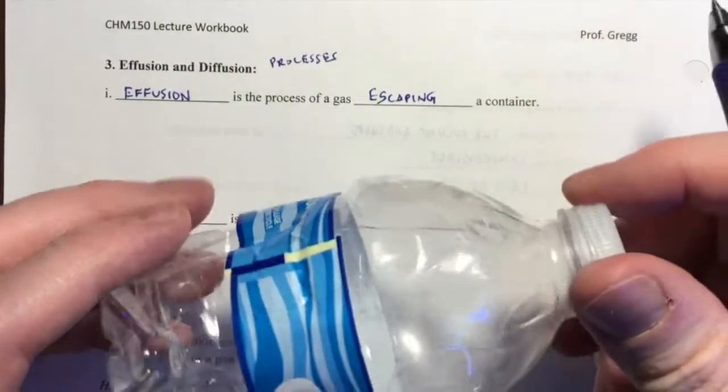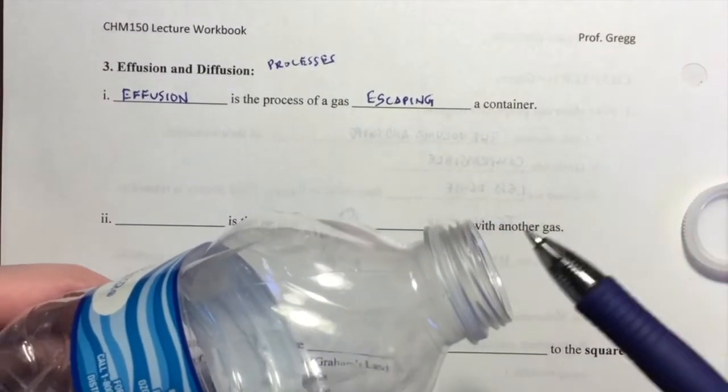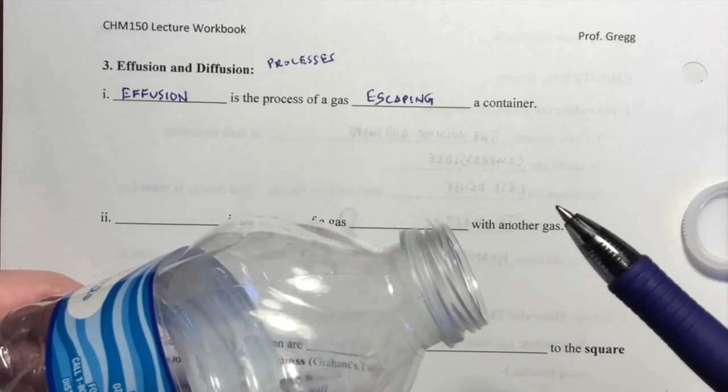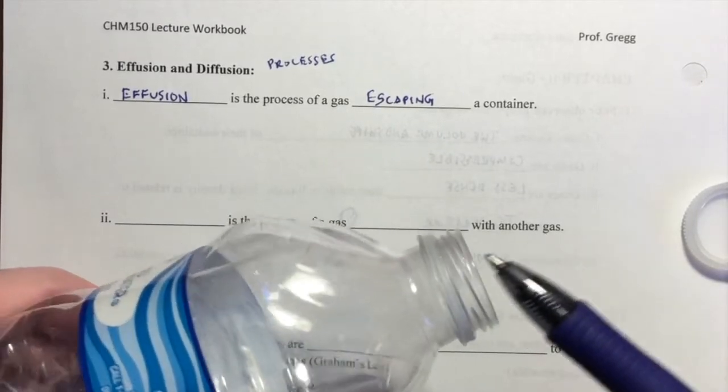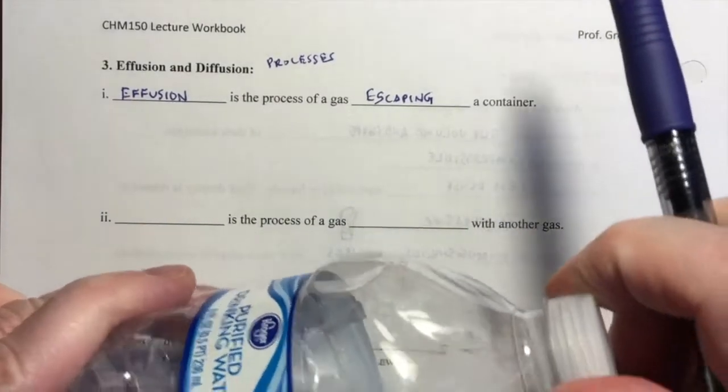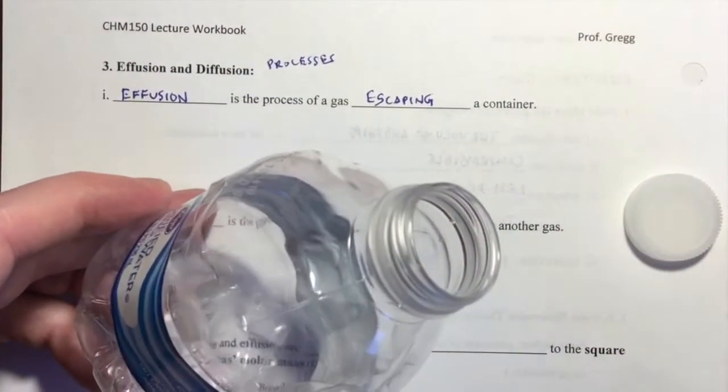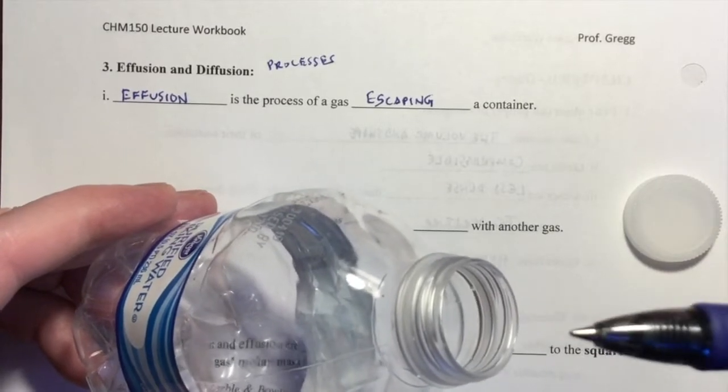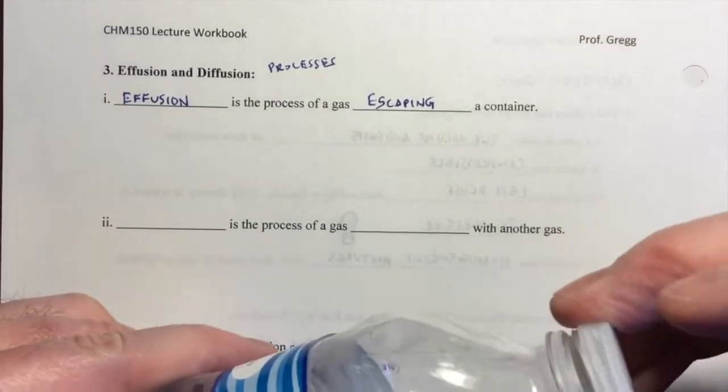For example, if I were to take this container of gas and I open it up, I can't see it, but right now there are many, many molecules of gas escaping this container. There are other molecules out here that are entering the container at the same time. There's a way that we could actually observe this process. We don't observe it with our eyes, but we can observe it with our nose. If you had a bottle of cologne or perfume and you were to take the lid off and smell at the lid, you would be able to smell the vapors, the gases from the fragrance effusing from the container. That's an example of a gas effusing or escaping a container.